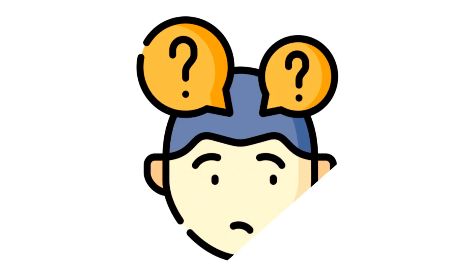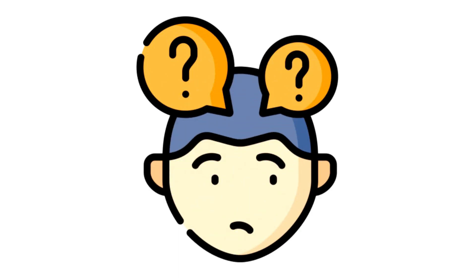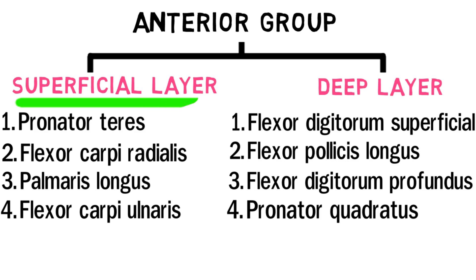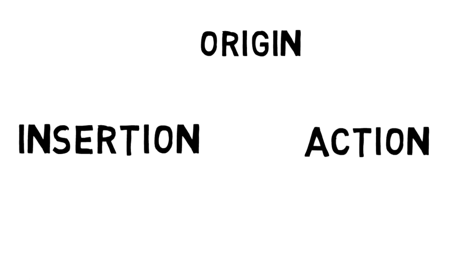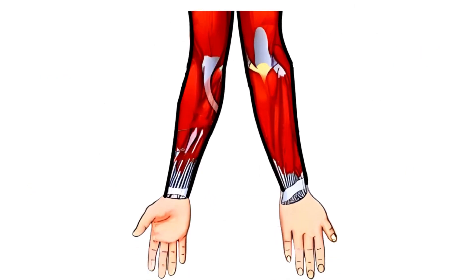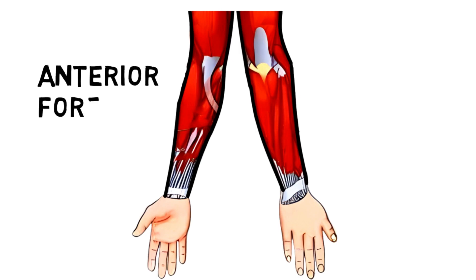As you can see, there are a lot of muscles to cover, so for this video we will cover the muscles of the superficial layer in the anterior group, and see the origin, insertion, and action of these muscles. But before that, let's have a look at the anterior and posterior groups. So this is the anterior and posterior view of the forearm where these muscles reside.